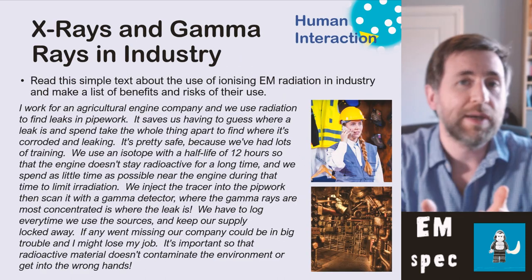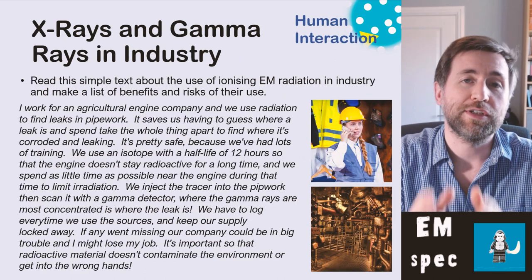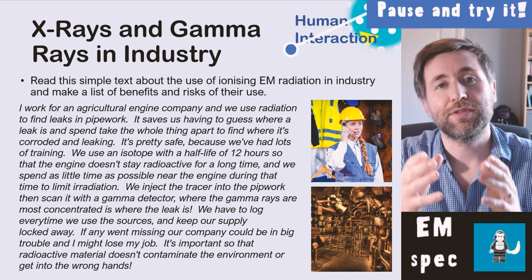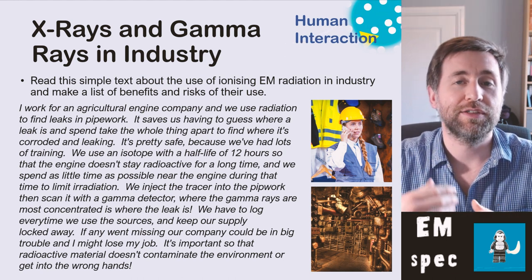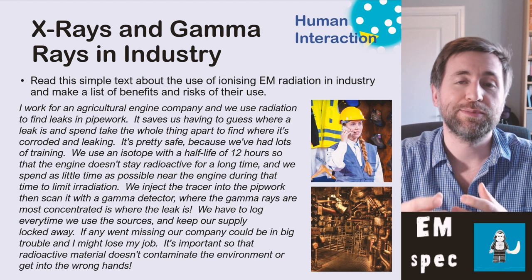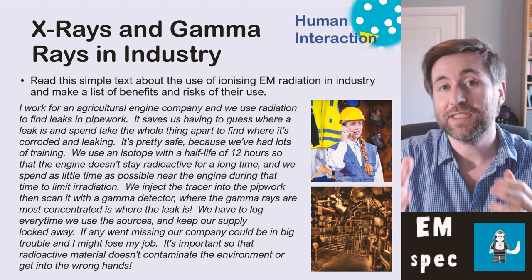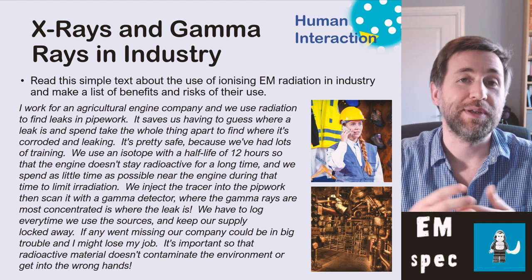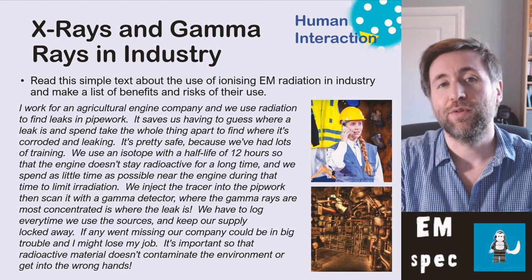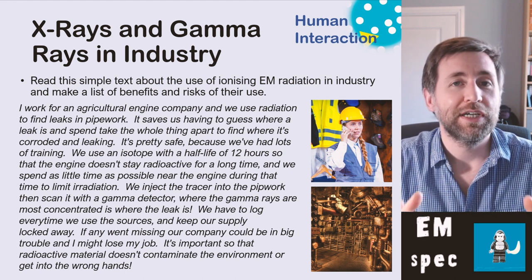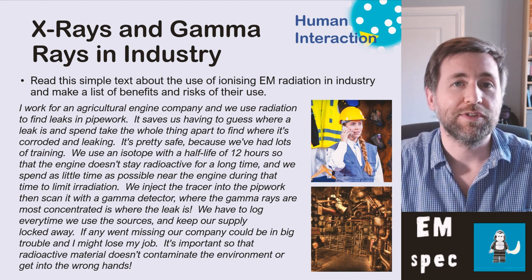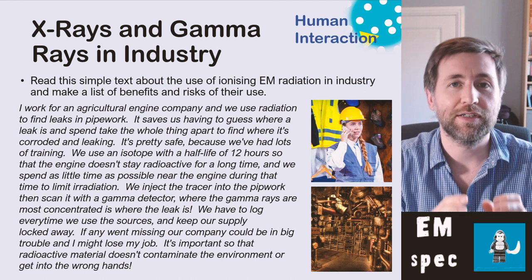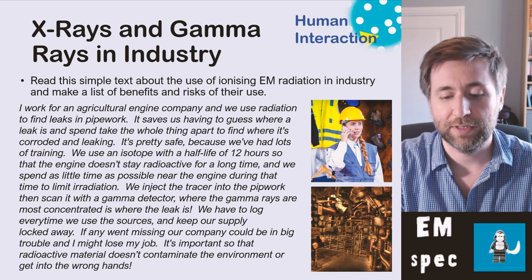Here's a use of gamma rays in industry. Gamma rays can be used as a tracer — you can inject a small amount of a radioisotope which emits gamma rays and therefore find leaks in pipework or underground pipes, so that you don't have to dig them up or dismantle the whole machine to find where the leak is.